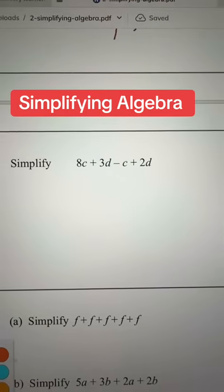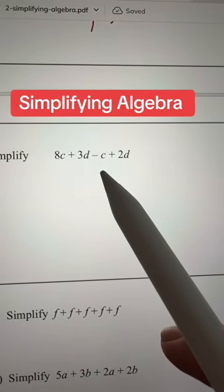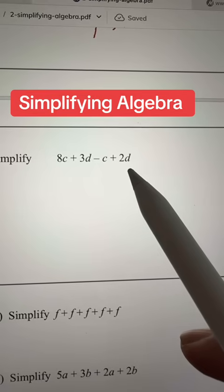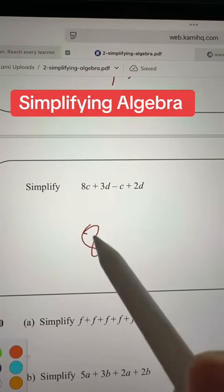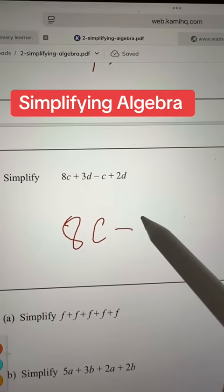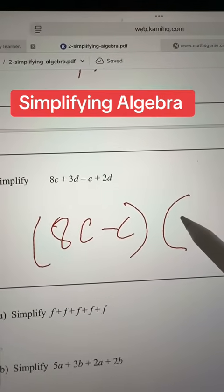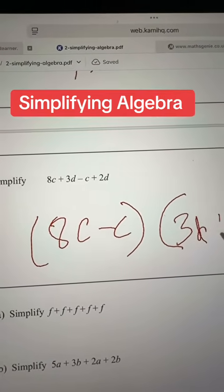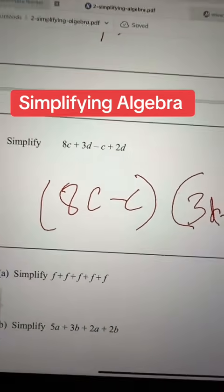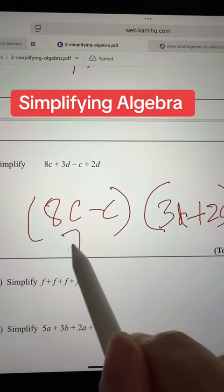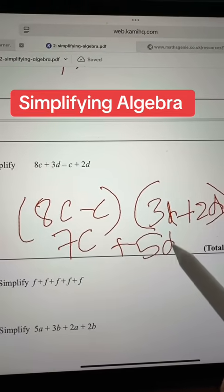Let's do another one now. So you have 8c plus 3d minus c plus 2d. So get all the c's together and get all the d's together. So it will be 8c minus c, and in brackets, 3d plus 2d. That is 7c plus 5d.